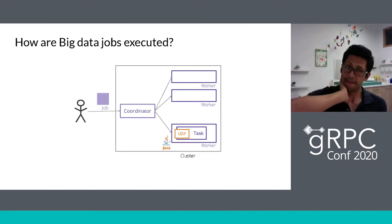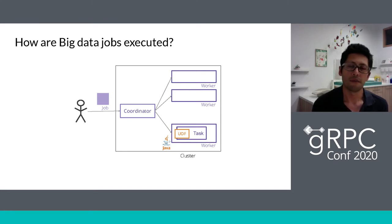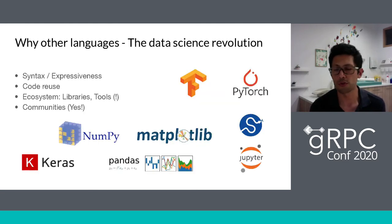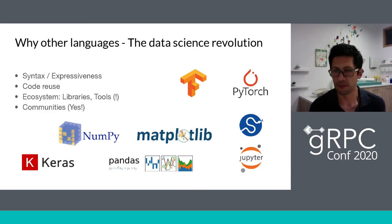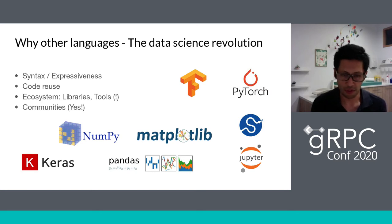In the last 10 years, the data science revolution appeared. People started to demand support for different languages like Python because they like the syntax and expressiveness of the language. Also because they could reuse code they already have and use the libraries and ecosystems they're familiar with — like PyTorch and pandas libraries that are mature and good.